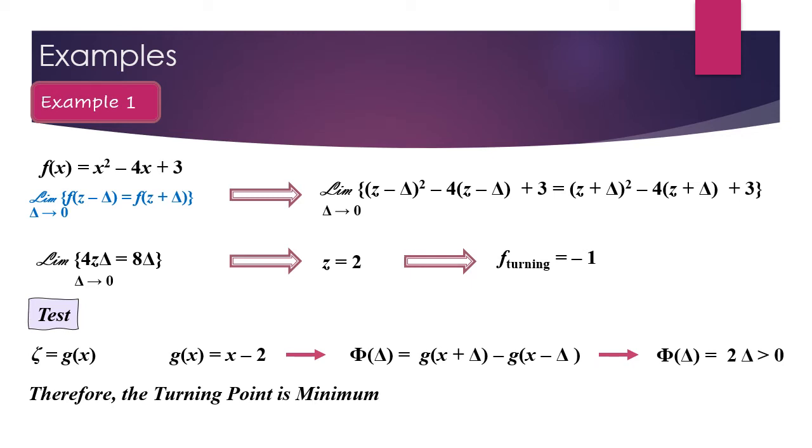Testing, and my zeta function, which is g of x, is x minus 2. And this x minus 2 here, if I find phi of delta, then g of x plus delta minus g of x minus delta, if I work out this, then it comes out to be equal to 2 times delta. But by definition at the start of my analysis, delta here is positive. Then obviously this is a positive number, and then this is a minimum, in which we already know that this has got a minimum value.